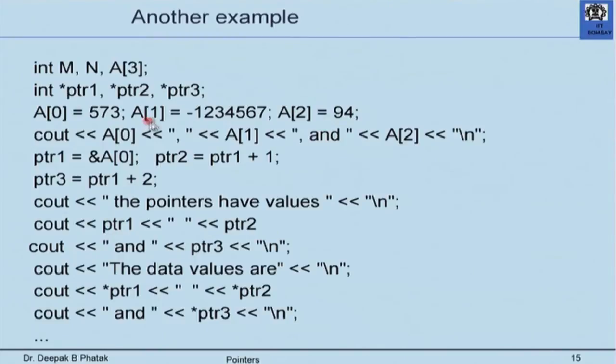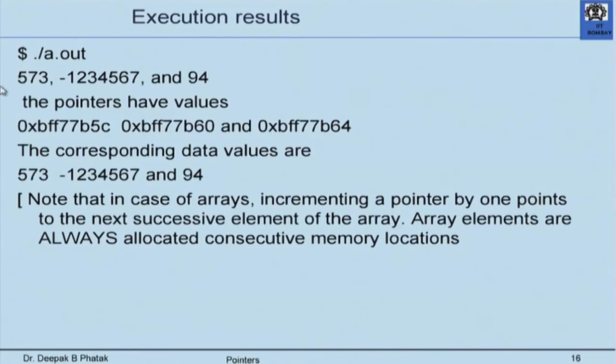These kinds of explanations are very useful to students who otherwise get confused about pointers. What is important to tell them is that if you are dealing with arrays, pointers with successive values of that particular type will always point to successive elements of the array, because array elements are always allocated successive locations. So if a[0], a[1], a[2] are assigned, and we assign &a[0] to ptr1, then ptr1+1 to ptr2, ptr1+2 to ptr3, and print *ptr1, *ptr2, *ptr3, we get the correct values.